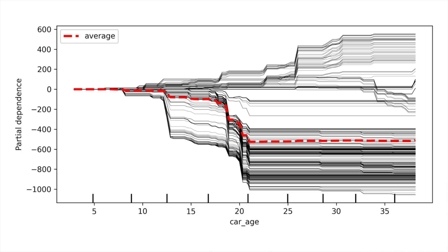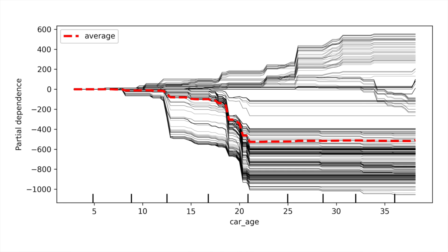To fully understand what's causing this behavior, we can change the color of the ICE plot. Let's use the car type feature. We make the lines blue for normal cars and red for classic cars. We can now see that this relationship comes from an interaction between car age and car type. Intuitively, it makes sense that a classic car would increase in value as it gets older.